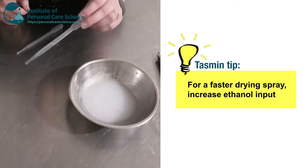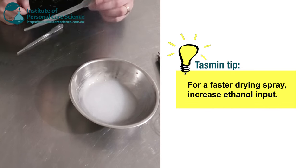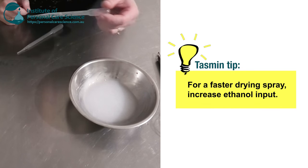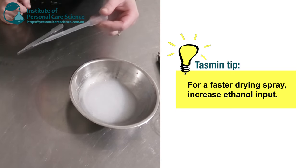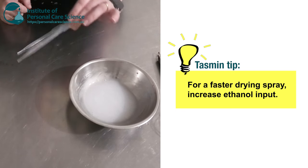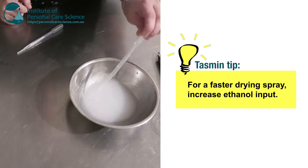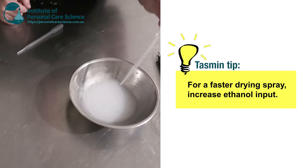Now next I'm going to add a little bit of ethanol. I want my setting spray to be fast drying. You don't want to leave someone with a very wet face after applying it. So the ethanol is going to help dry it very quickly. You can however use some isopropyl alcohol as well.